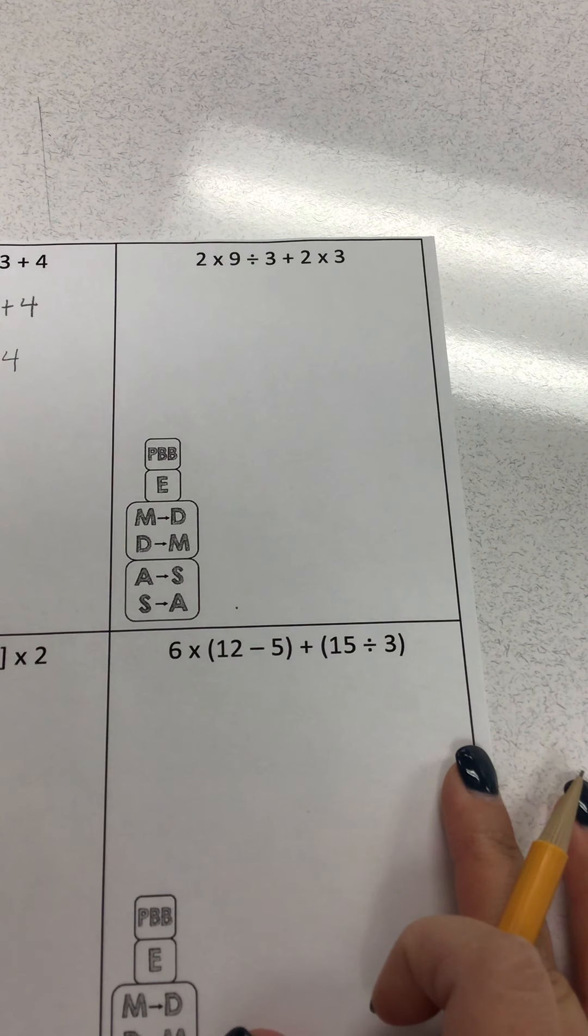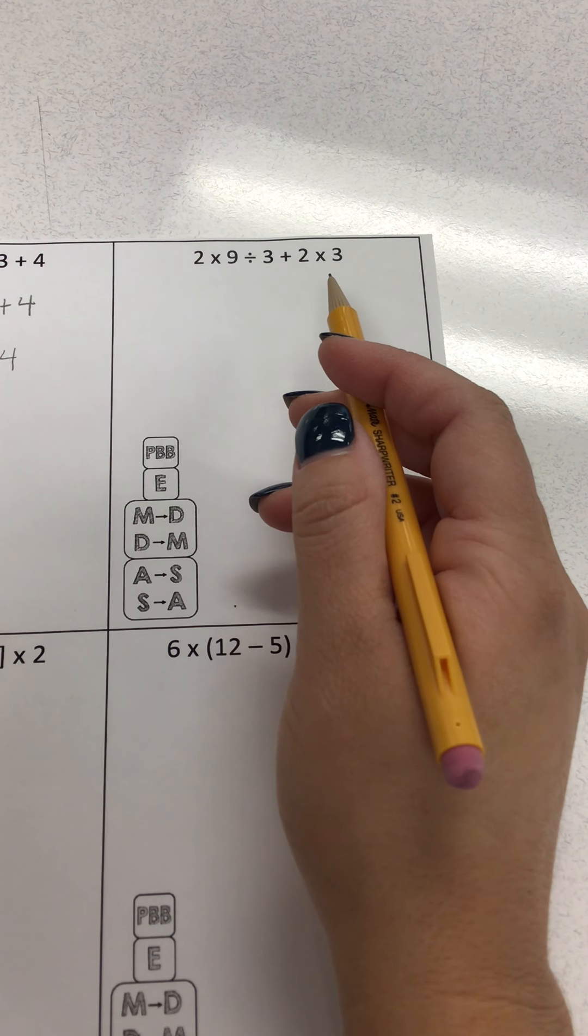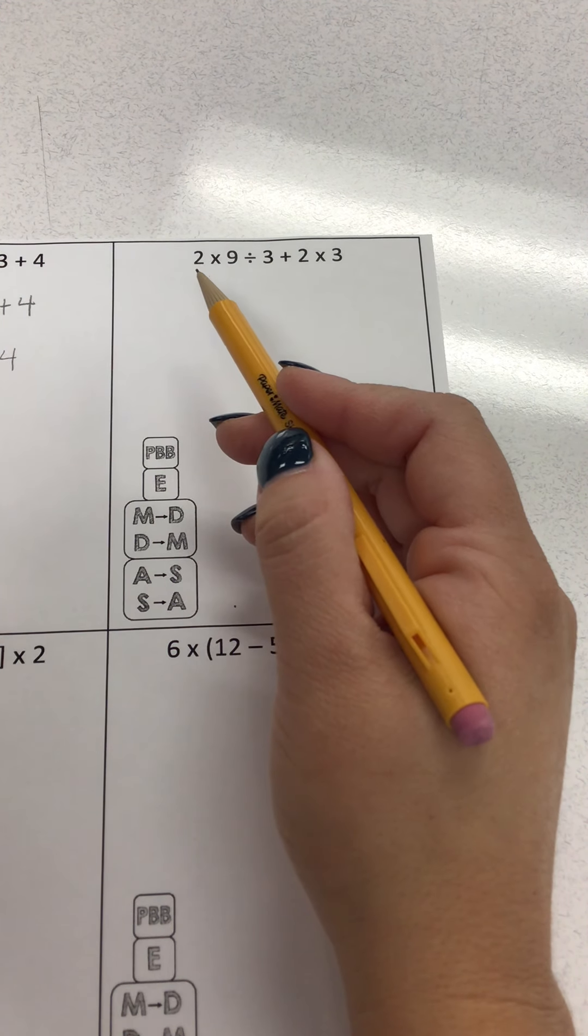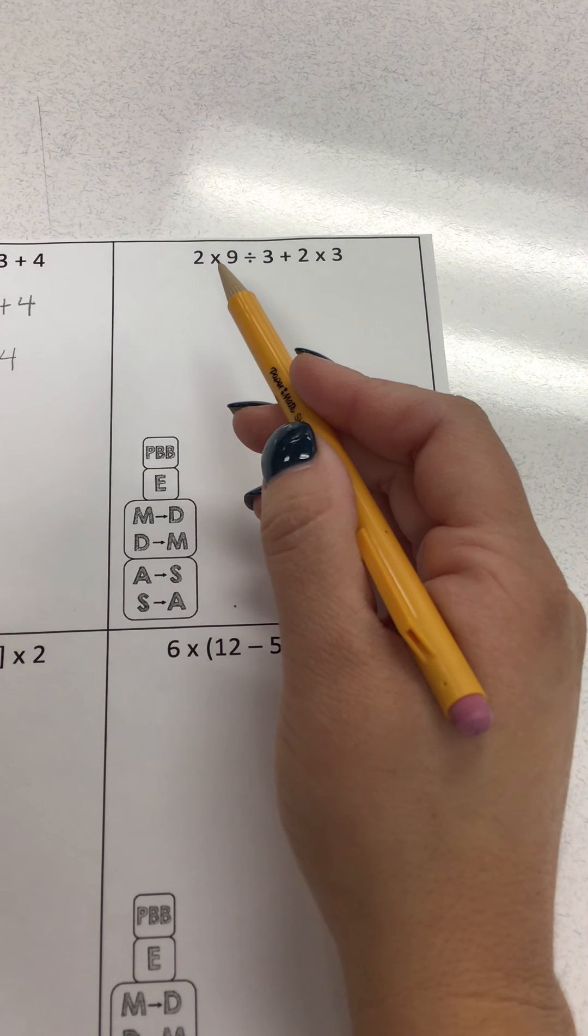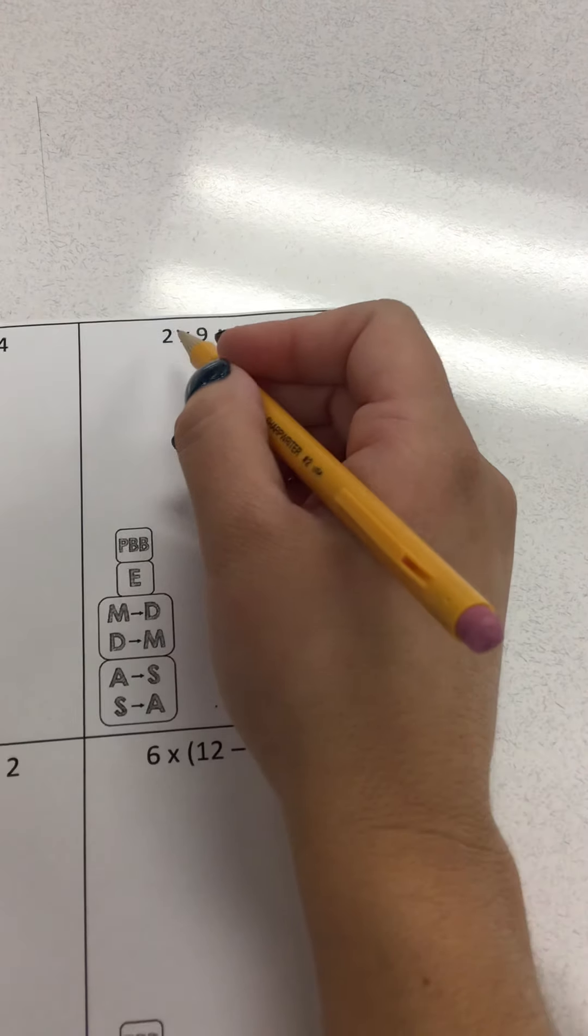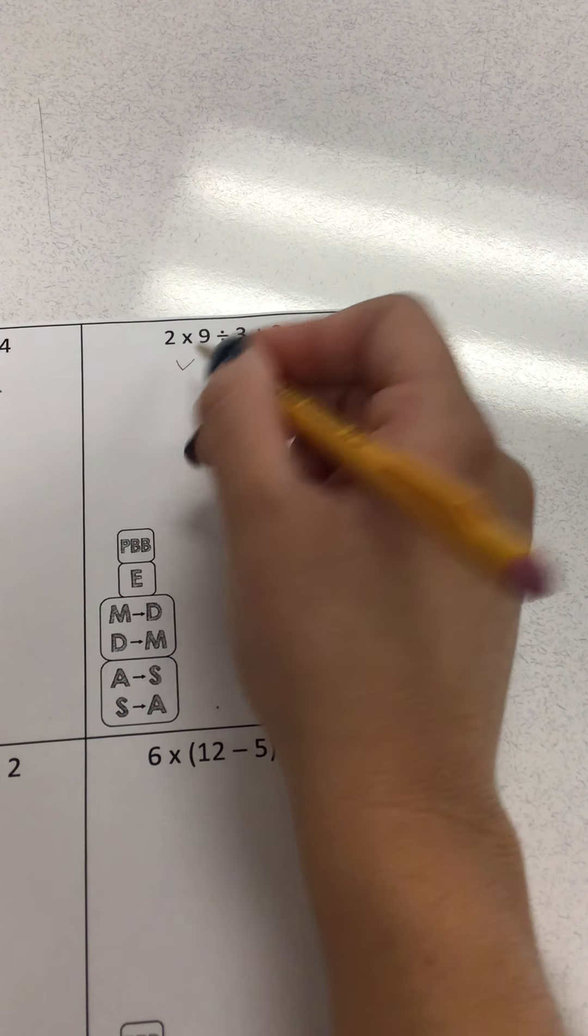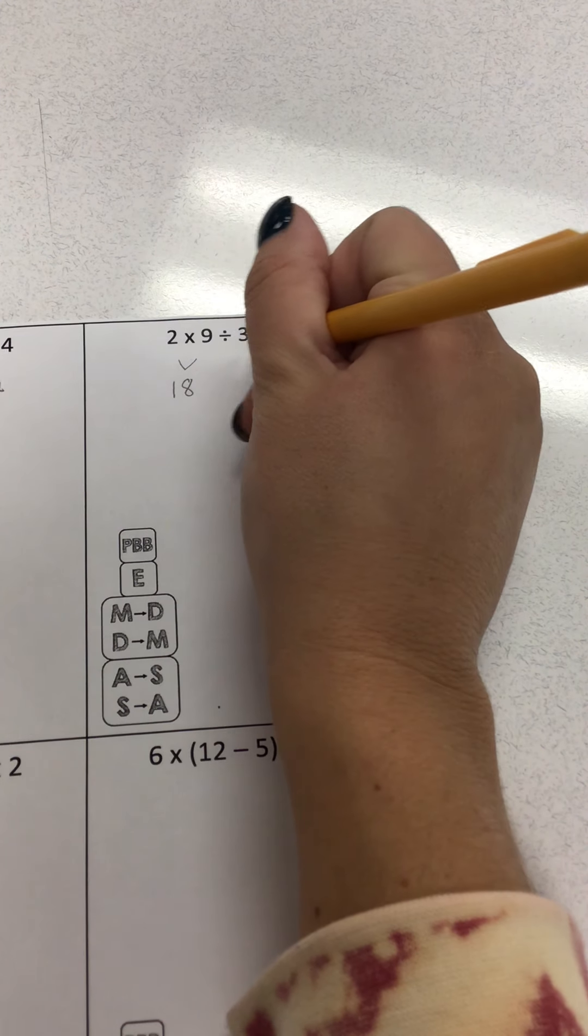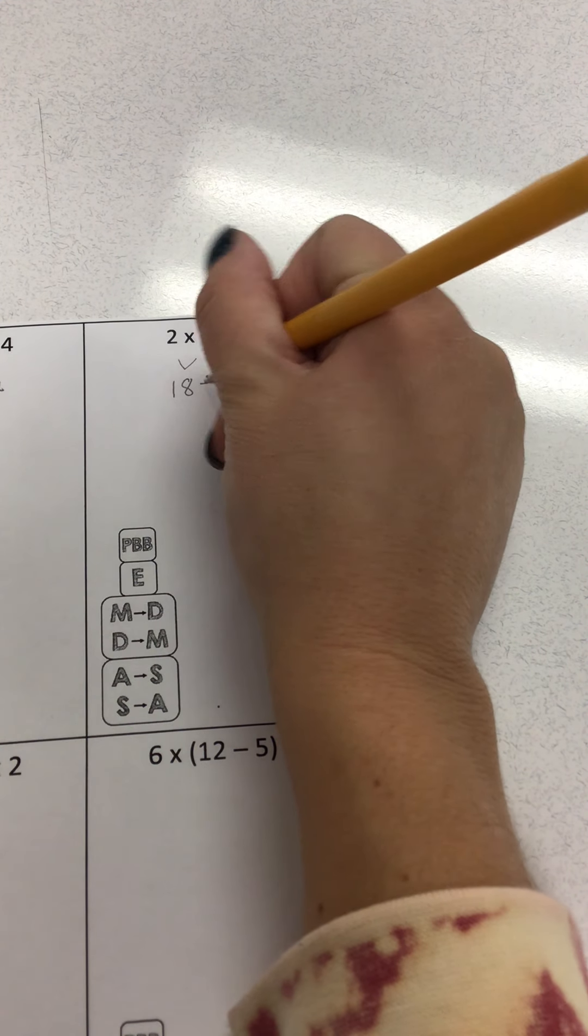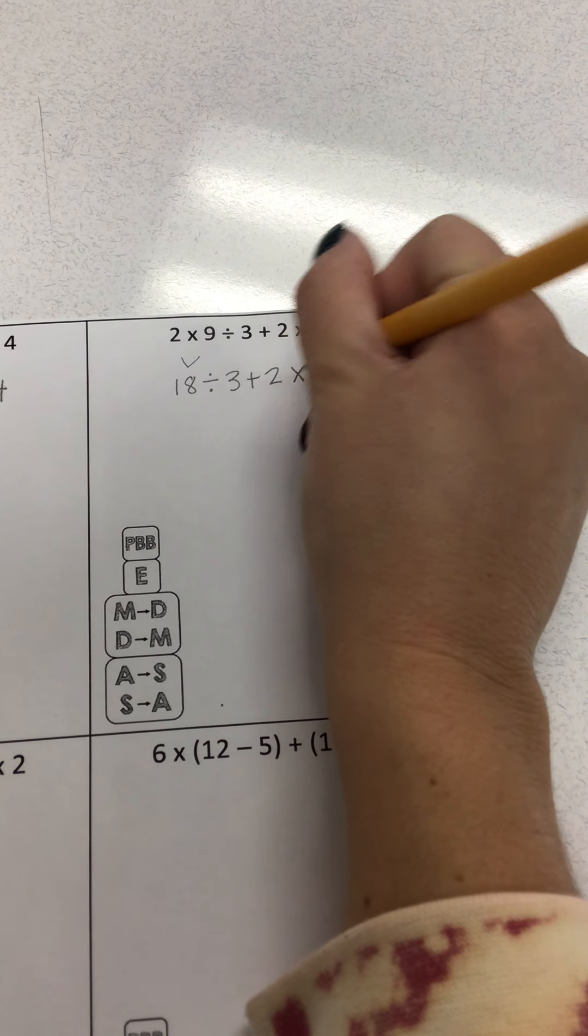Let's try another one. I have multiply, divide, add, multiply. Moving left to right, I have multiply and divide and multiply comes first when I move left to right. So I'm going to solve that first. 2 times 9 is 18. I bring down everything else divided by 3 plus 2 times 3.